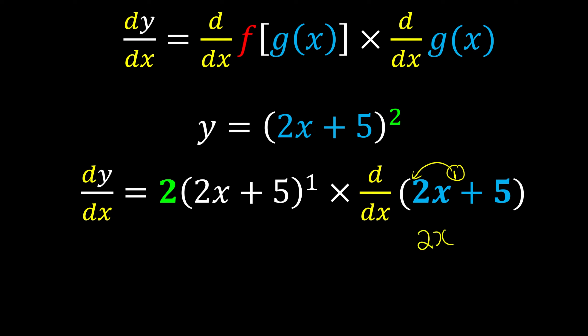And x, 1 minus 1, which will become 0. So this one becomes just 2. So we times 2 because 2 is the derivative of the inner function. This is the first part of it. Then we merge them together. 2 times 2, we get 4. So the answer is going to be 4 bracket 2x plus 5 to the power of 1.